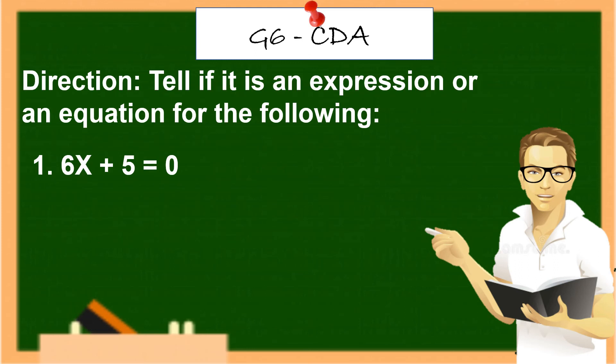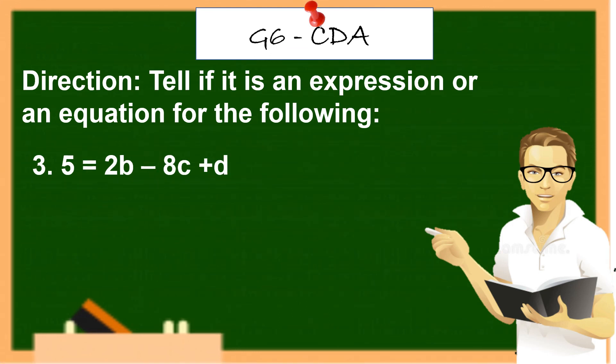Direction: Tell if it is an expression or an equation for the following. Number 1, 6x plus 5 is equals to 0. What is your answer? Yes, correct! Equation. Number 2, 32 plus 7 minus 5 is... Very good, expression. Number 3, 5 equals to B minus 8C plus D. Your answer? Equation.